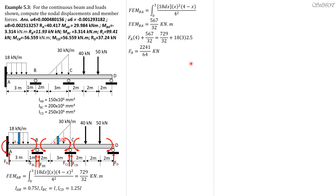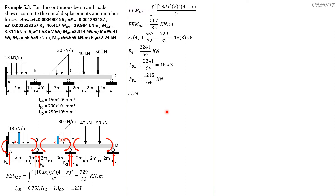Then for summation of forces in Y to solve for FD left: FD left plus 2241 over 64 equals 18 times 3. So FD left equals 1215 over 64 kilonewtons.